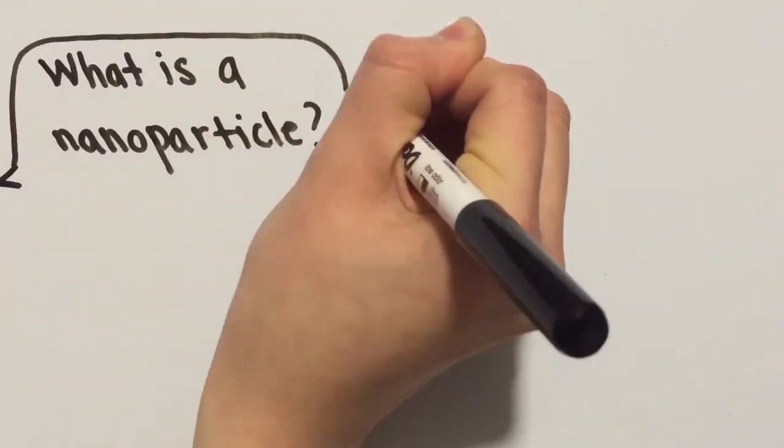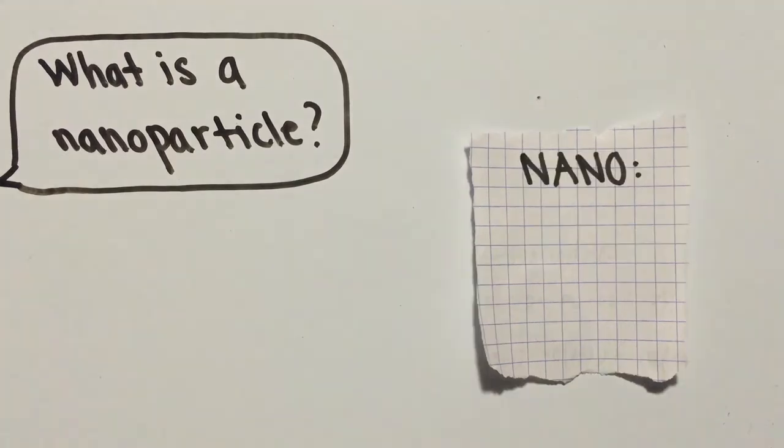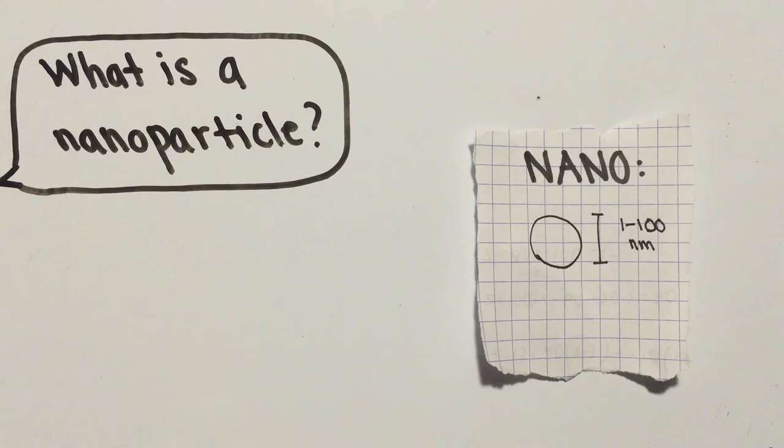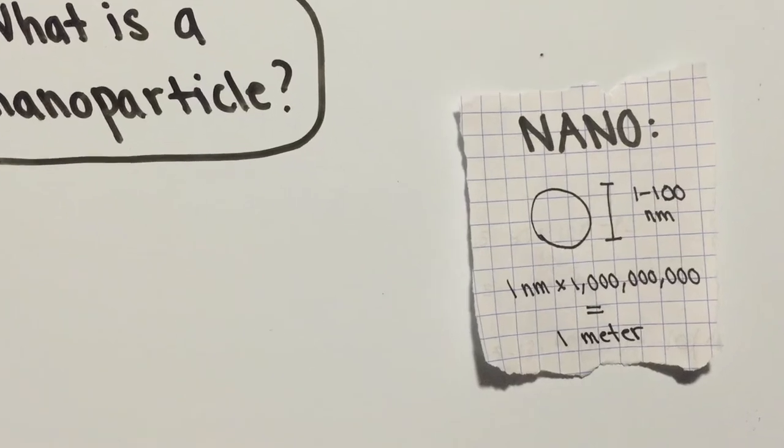And how would smaller particles better protect our skin? A particle can be defined as nano if at least one of its dimensions is between 1 and 100 nanometers. A nanometer is one billionth of a meter, and a sheet of paper is about 100,000 nanometers thick. This means that thousands of nanoparticles can fit on the edge of a sheet of paper.